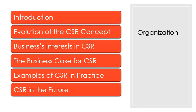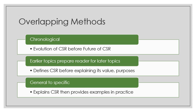Looking at the CSR article's organization — introduction, evolution, business interest, business case, examples, and CSR in the future — we can see multiple overlapping methods at work. There's a chronological sense: they have to talk about the evolution of CSR before discussing its future. It's also about earlier preparation for later understanding — they define CSR before explaining its value or giving examples. And it moves from general to specific: it explains CSR in general and then gives specific examples in practice.